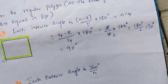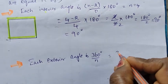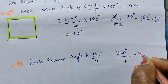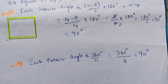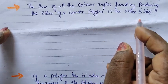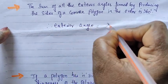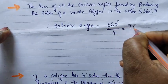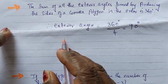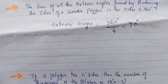Each exterior angle is 360 by n. So each exterior angle equals 360 by 4, which equals 90 degrees. The sum of all exterior angles formed by producing the sides of a convex polygon in order is 360 degrees. So the exterior angle equals 360 by 4, equal to 90 degrees. All the sides of the polygon have exterior angles equal to 90 degrees.